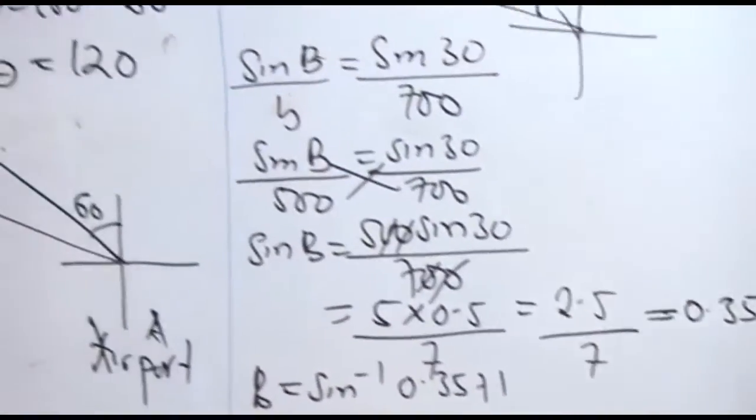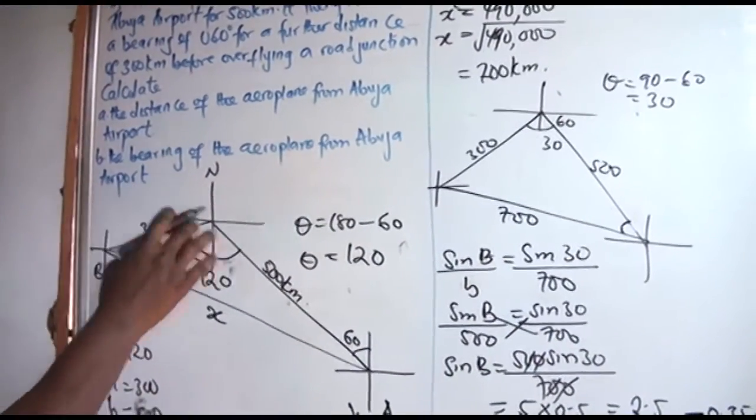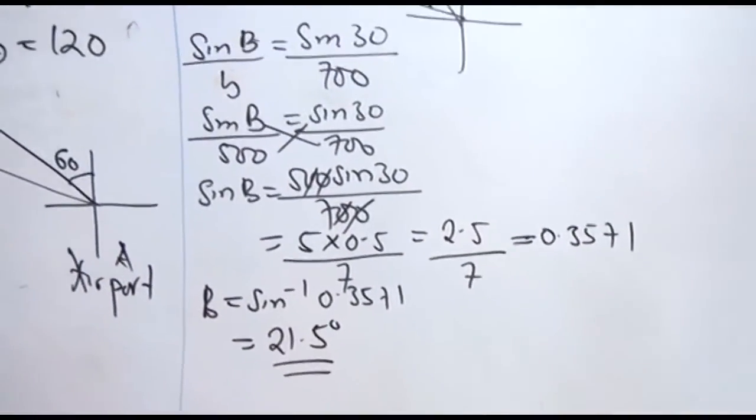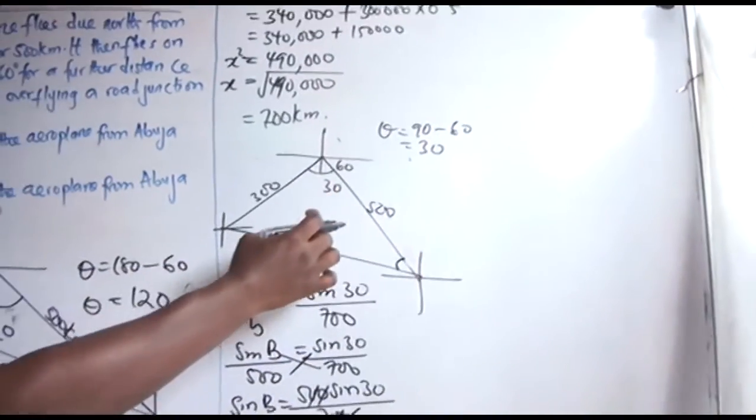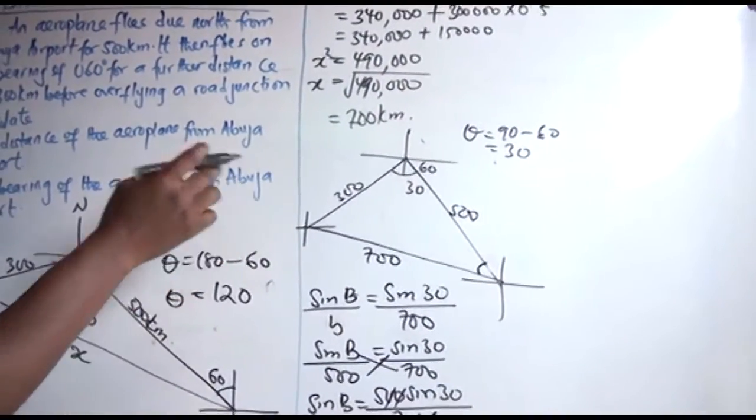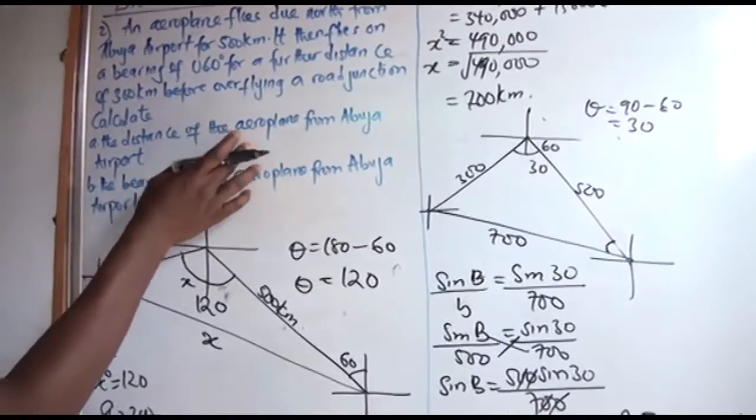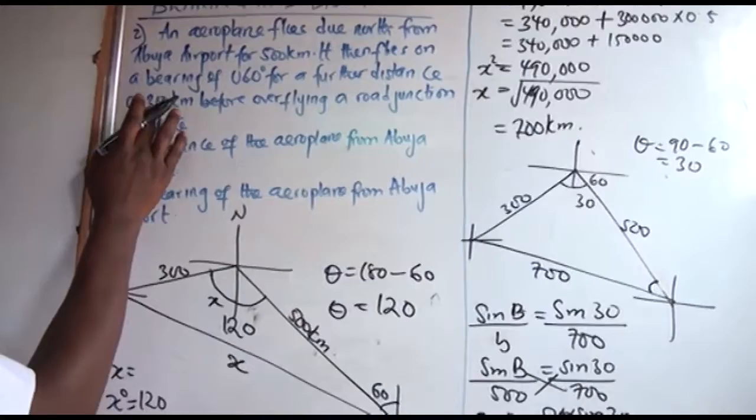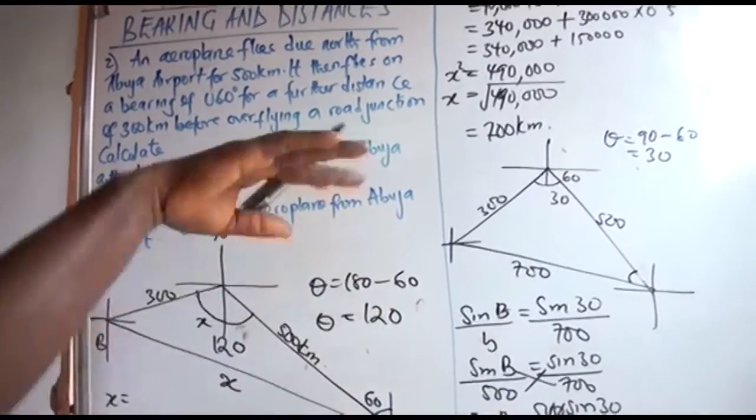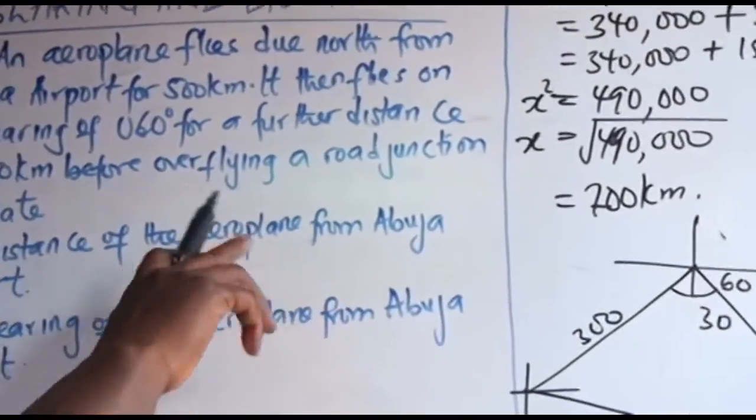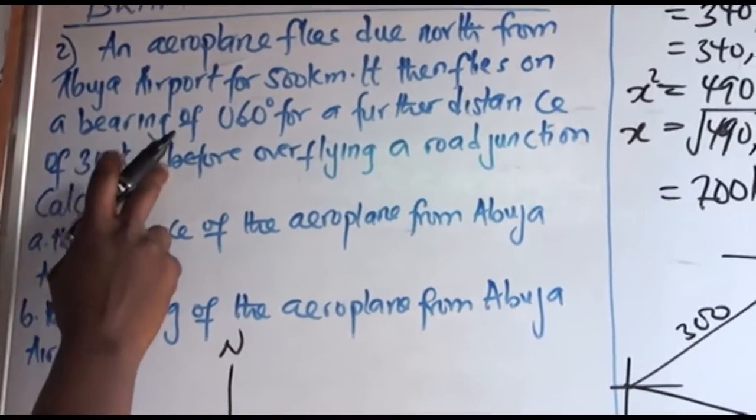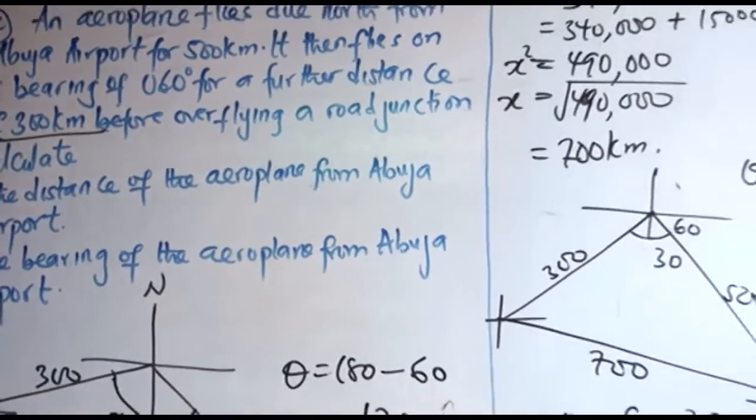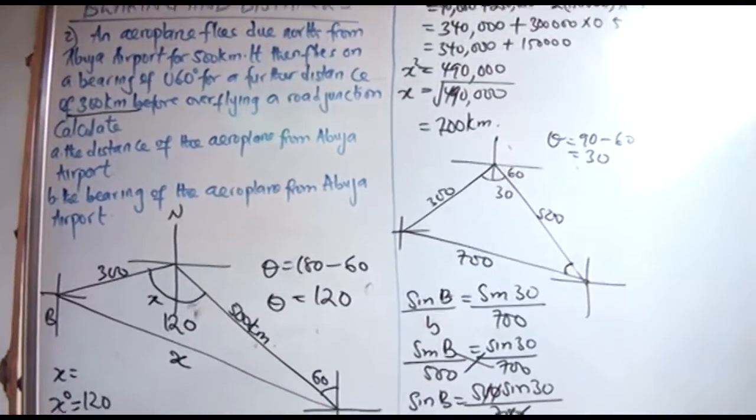So the bearing of the aeroplane from Abuja Airport will be 21.5 degrees. Now a question might arise: Why do I use 300? I use 300 because the question was telling us that before overflying the road, for a further distance of 300 kilometers, that means the bearing changes. The bearing changes after traveling that distance of 300 kilometers. That is the reason why we involve 300 instead of 500 in the question. Thank you very much. Stay blessed and expect the next question.